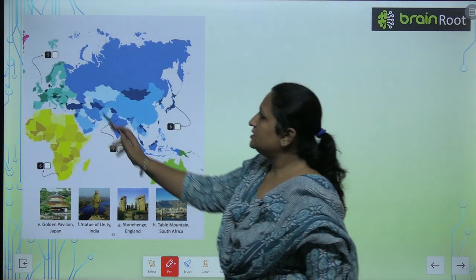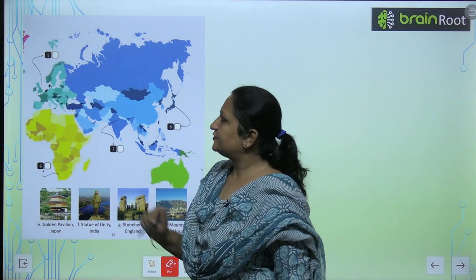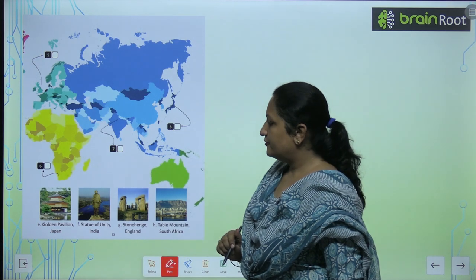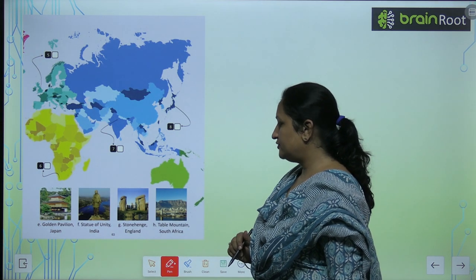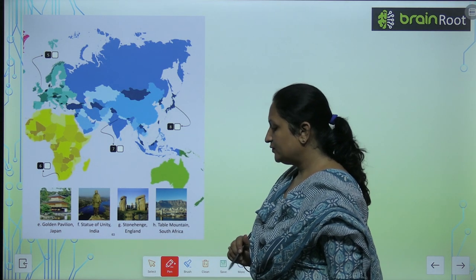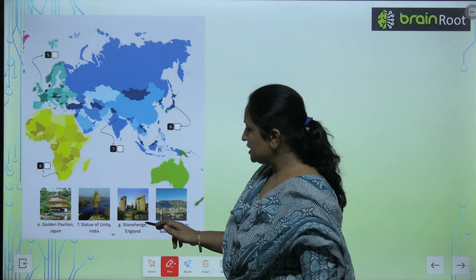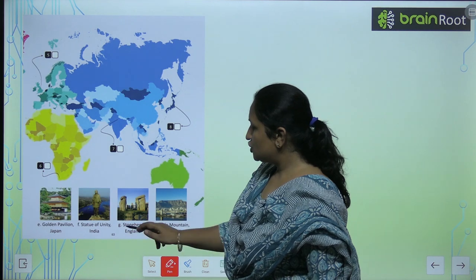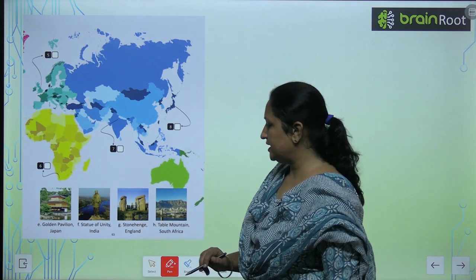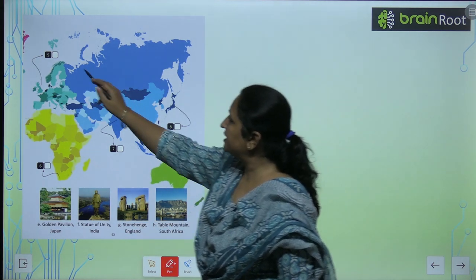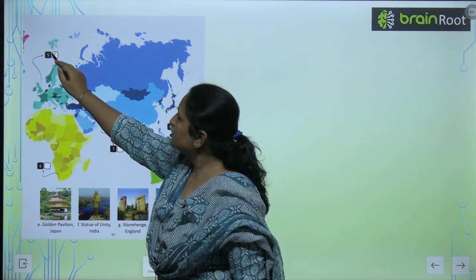Now children, see the fifth one. What is the fifth one? This is G — Stonehenge, England. So you will write G here.